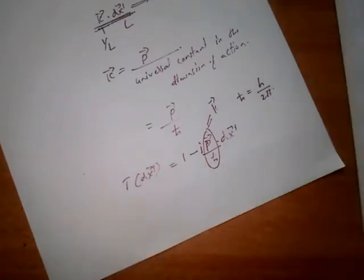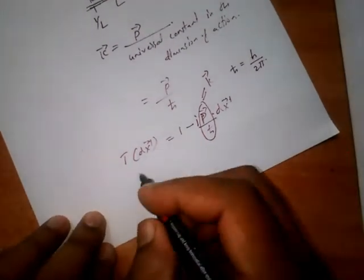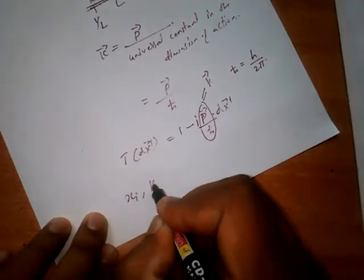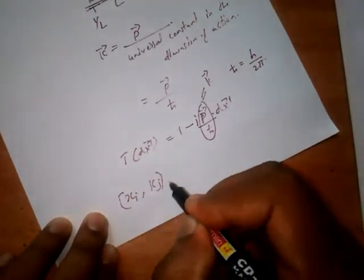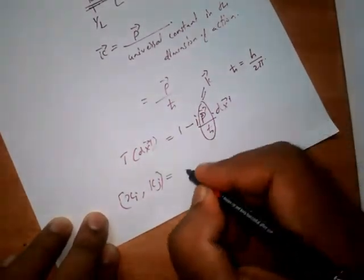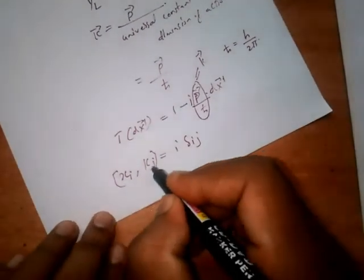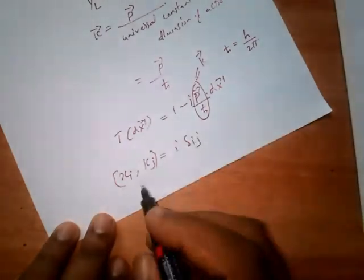We can write commutation relation. We have already solved a commutation relation that is [x_i, k_j] = iδ_ij. So we can write p/ℏ instead of this k_j.